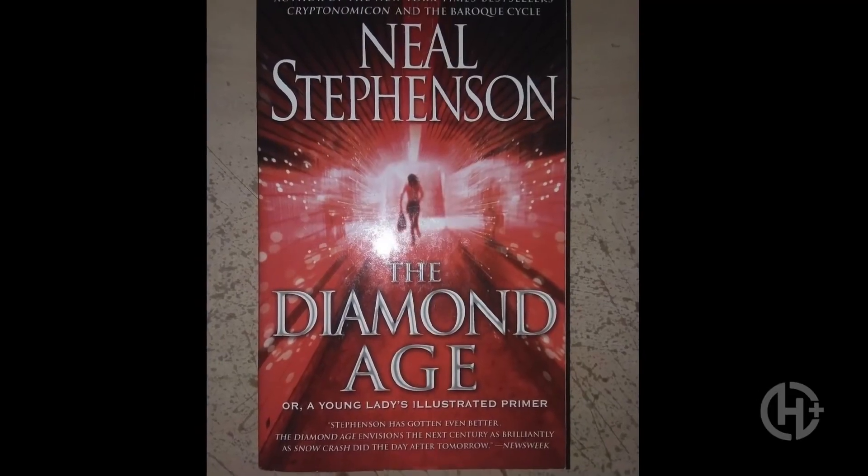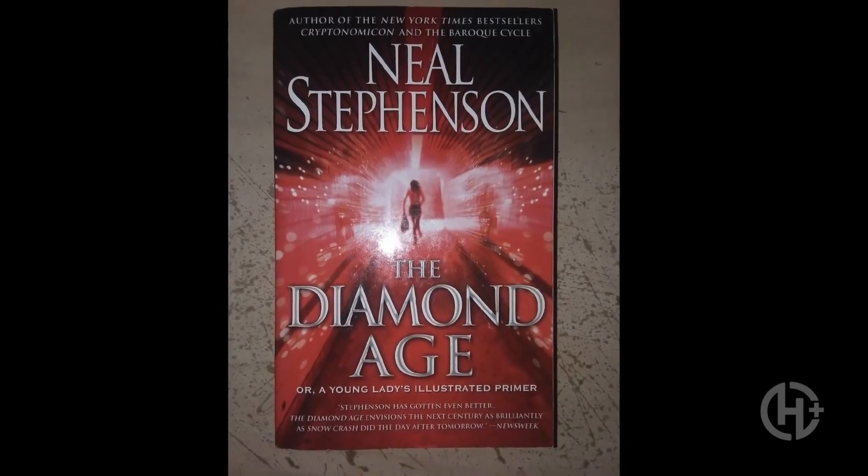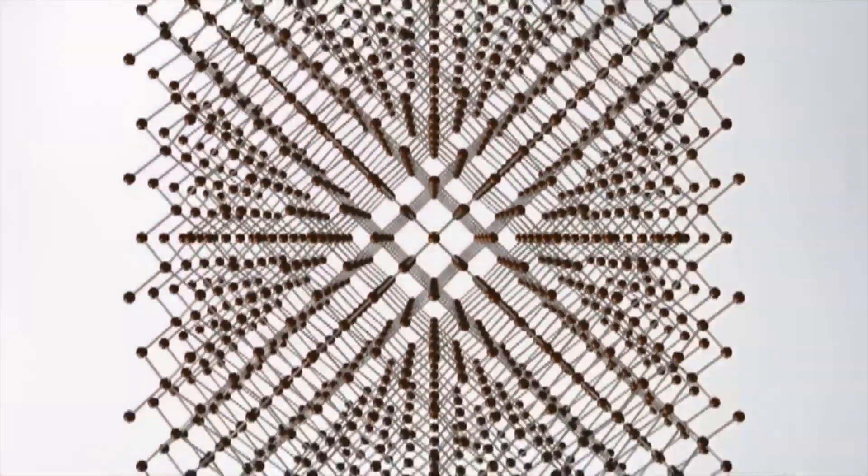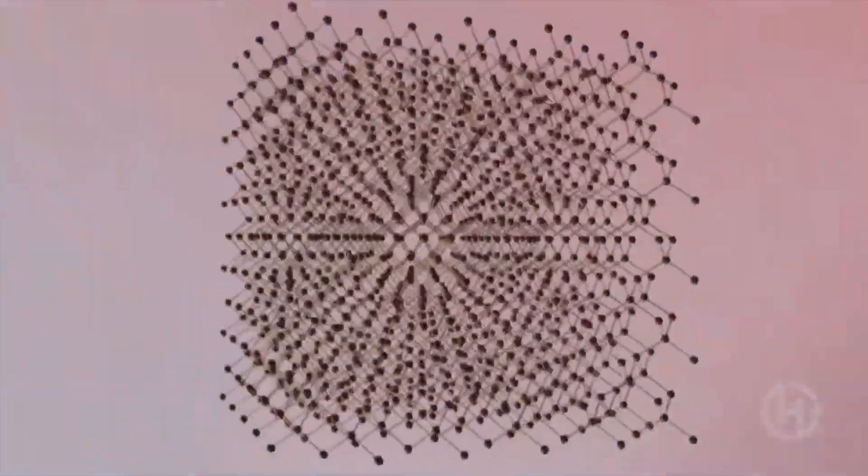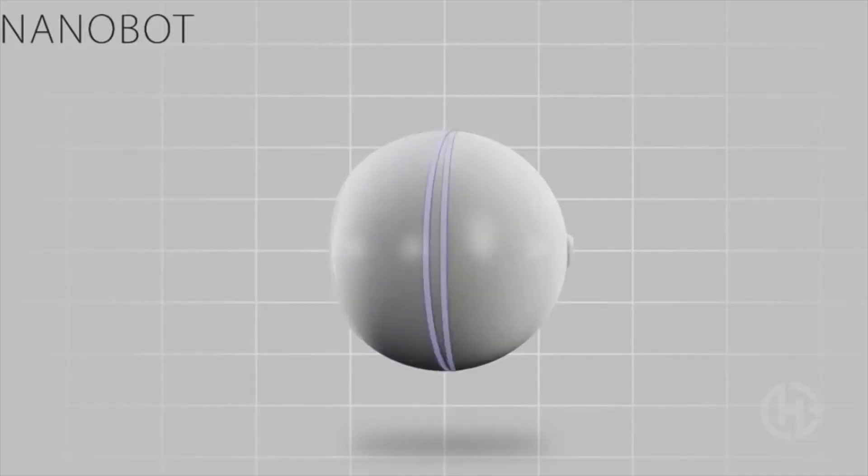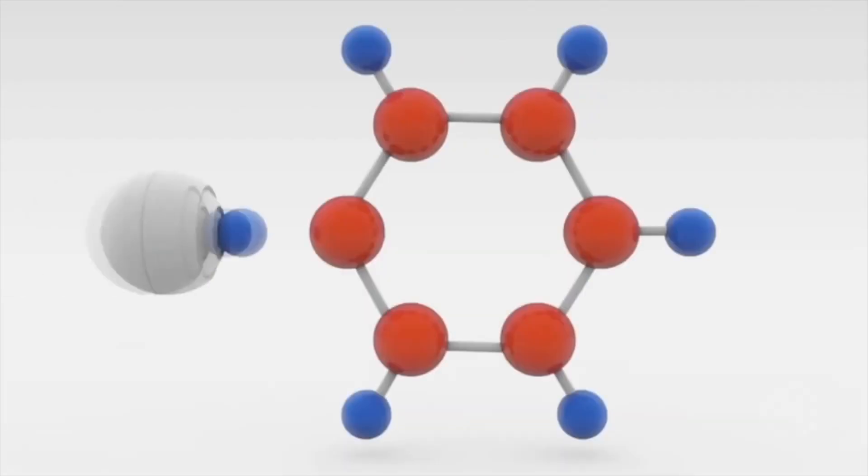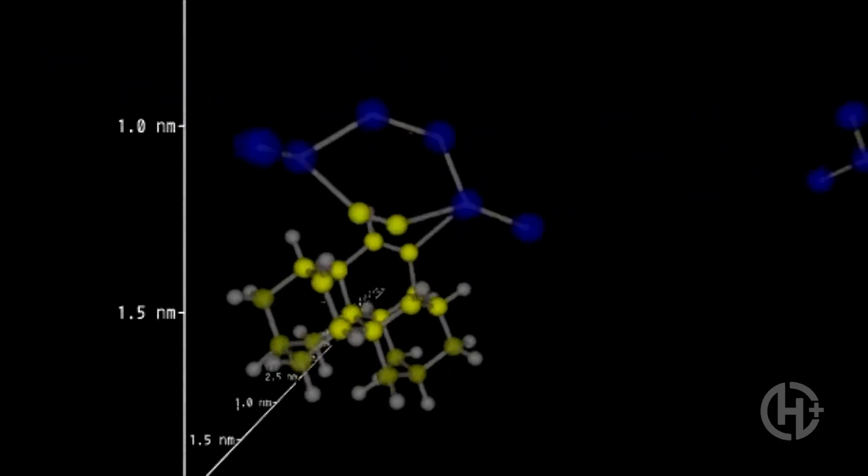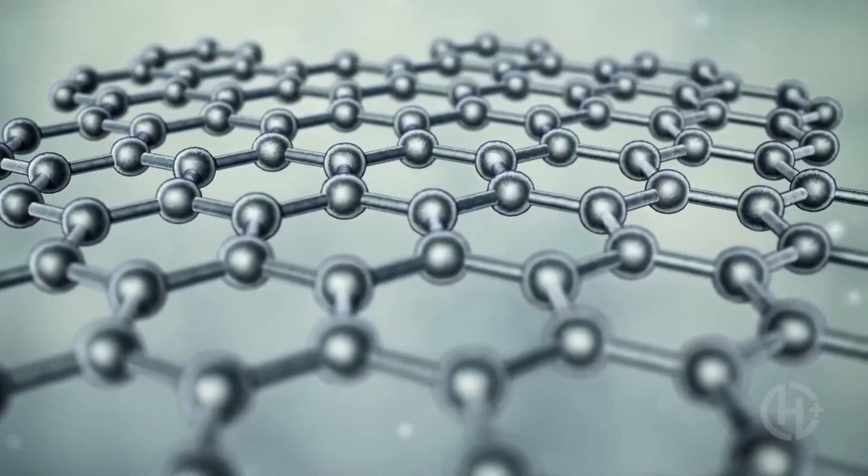Sci-fi author Neal Stephenson even coined the term Diamond Age to describe a future society where we'll be able to make everything from a single compound called Diamondoid, manufactured by nanoscale machines. A so-called Diamond Age might be very far off, but a Graphene Age might just be feasible.